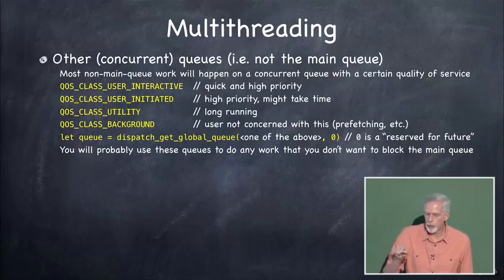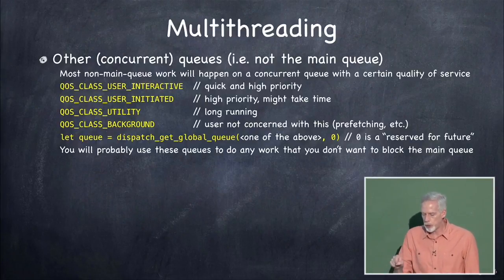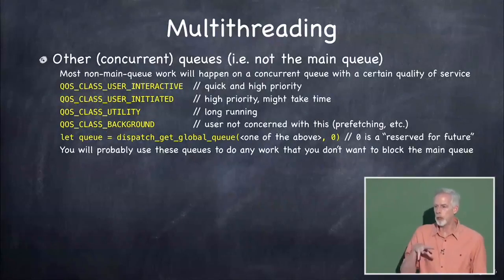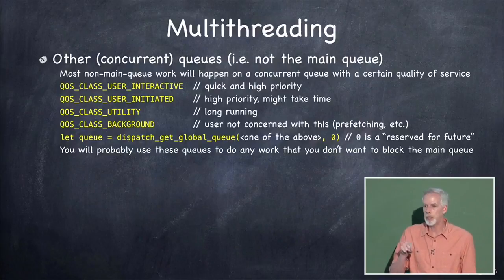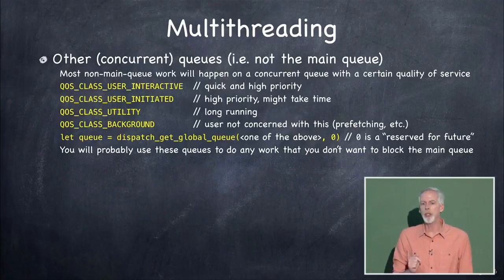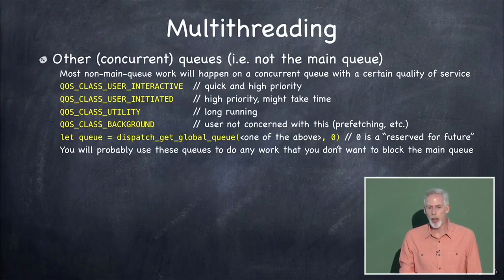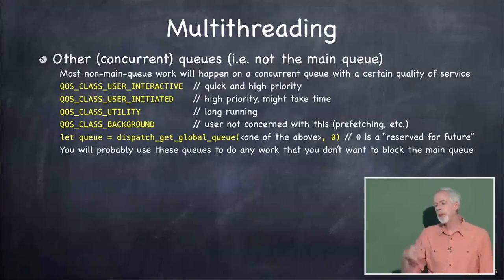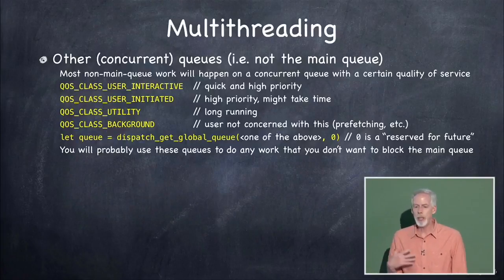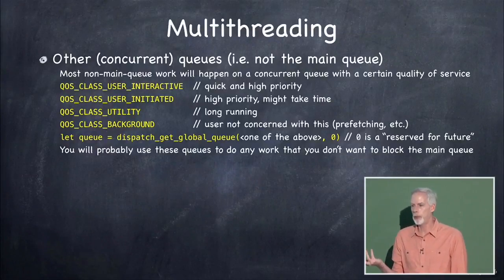User interactive might be something like the user dragging their finger and you're calculating something intensive — so you put it off on a thread, and the result comes back a little bit behind their finger, but at least the main queue is still listening to and responding to their finger. UserInitiated means the user just asked you to do this but it's not in the middle of an interactive event — take a little bit of time but get back quickly. Utility is something that usually runs in the background for a long time, maybe fetching data or cleaning up a database — something the user didn't directly ask for but needs to be done.